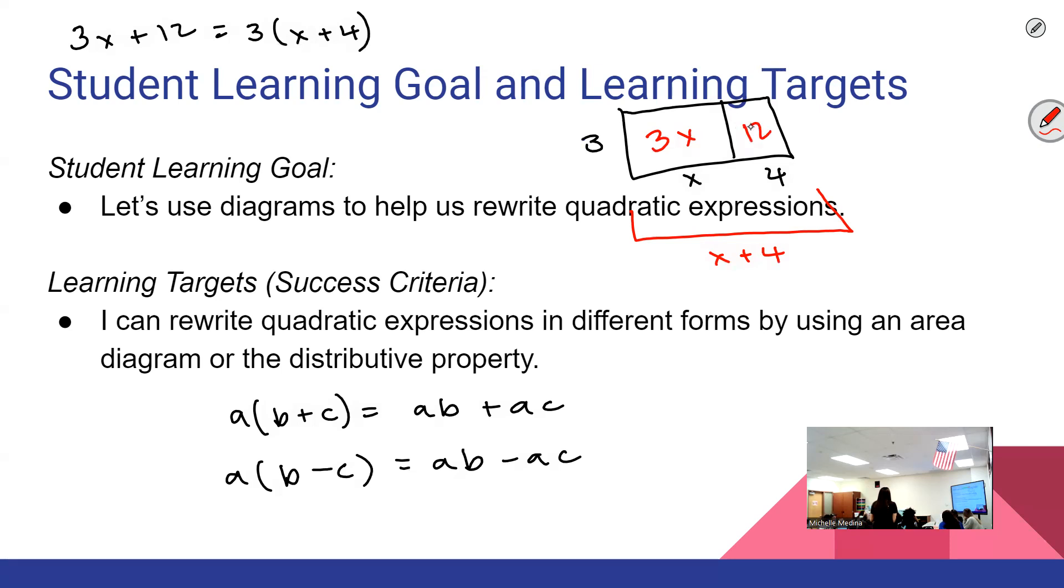Well, this is the area for this smaller rectangle, and if I want the area of the whole thing, I just add those areas together, which would be the same thing as if I did the distributive property where I did three times this entire side length, three times x is 3x, three times four. So that was basically the gist of it. You could use an area diagram to help you with the distributive property, if that helps you, or just know how to do your distributive property.